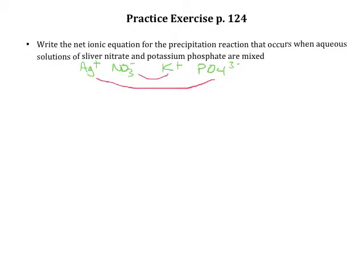I'm going to start by writing out my molecular equation. My first reactant was silver nitrate, with the formula AgNO₃ based on the charges, and it was in aqueous solution. It reacted with potassium phosphate, which has the formula K₃PO₄ based on the charges, also aqueous.